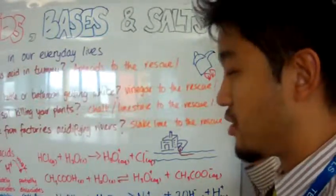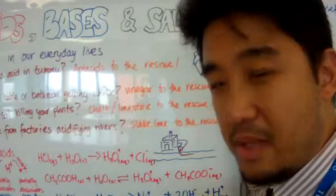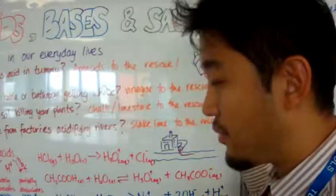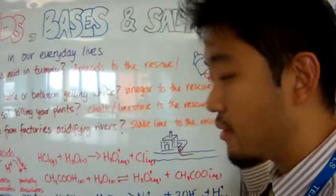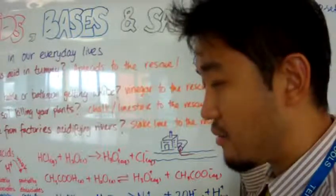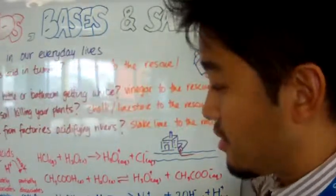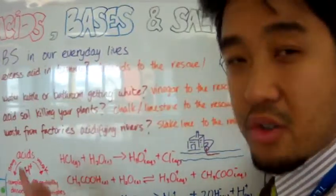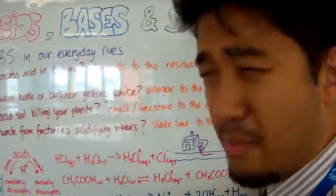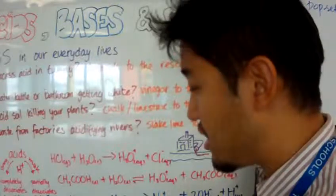Then we talk about bases. There's also two types of bases. Strong base and weak base. Bases, when put inside water, will dissociate. If they dissociate, they become alkalized. So, a strong base will also completely dissociate, and a weak base will partially dissociate.